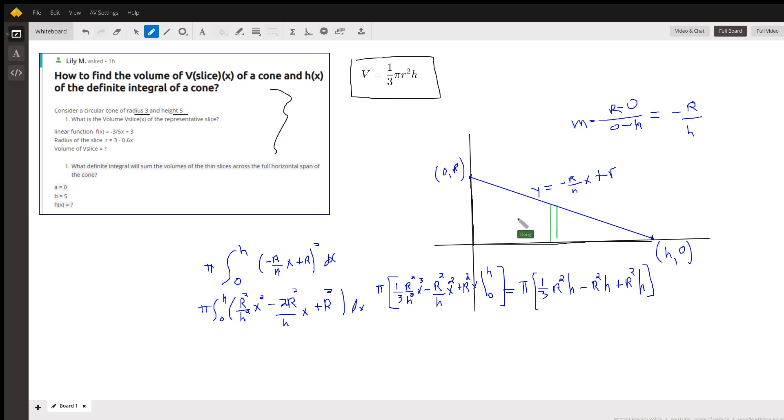We're going to revolve this region about the x-axis using the disk method. So that's pi times the integral, in this case, from 0 to h of the radius squared. Question is, what is the radius?